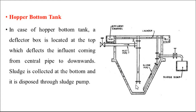The wastewater comes in first in a downward direction and then flows upward. The impurities settle at the bottom of the hopper bottom tank. Through a pipe, the clear wastewater is taken out. The settled sludge is pumped through a pipe and taken out of the hopper bottom type of tank.